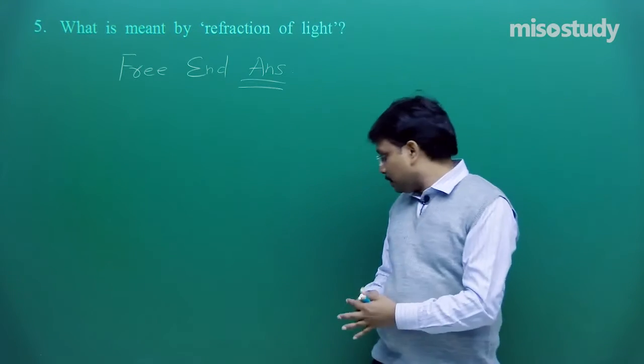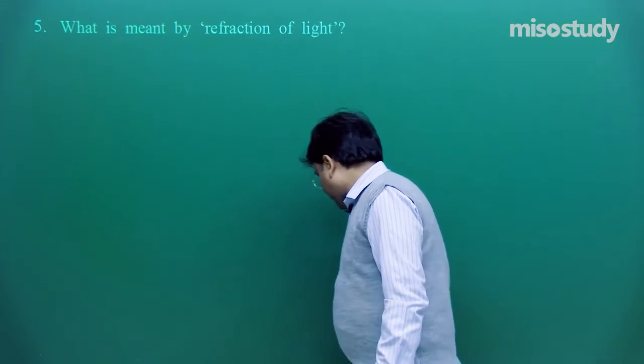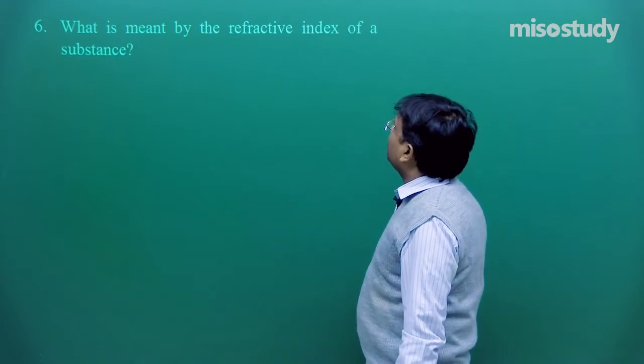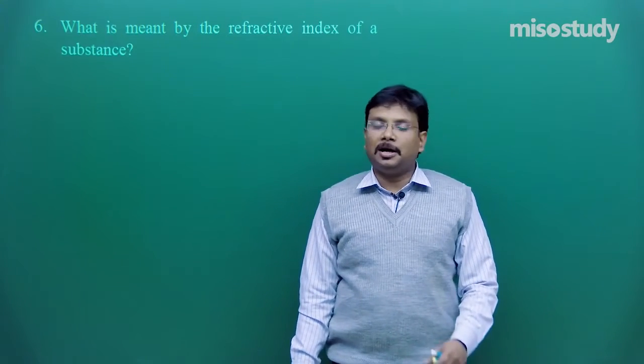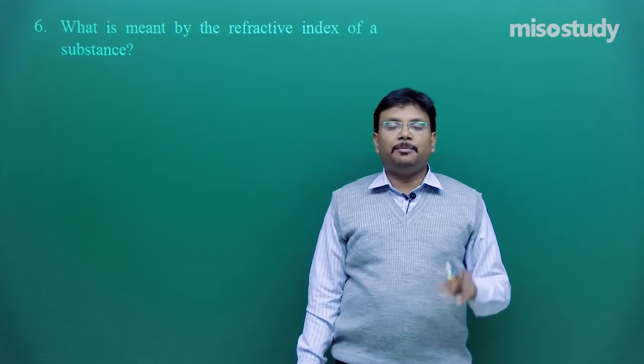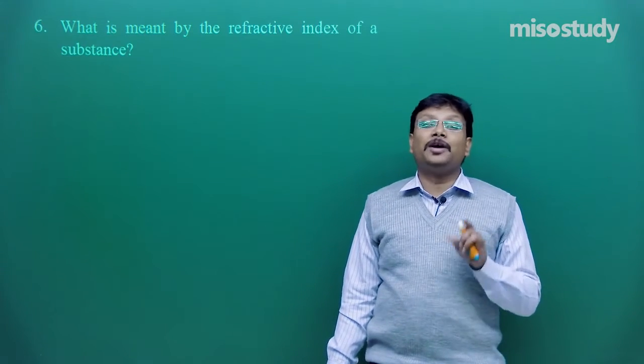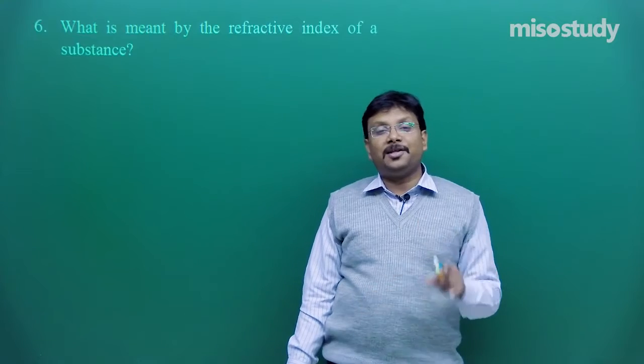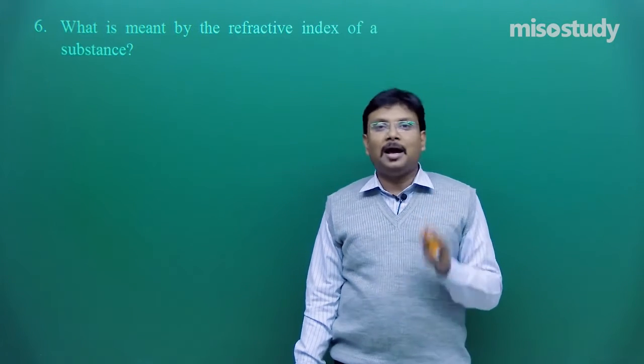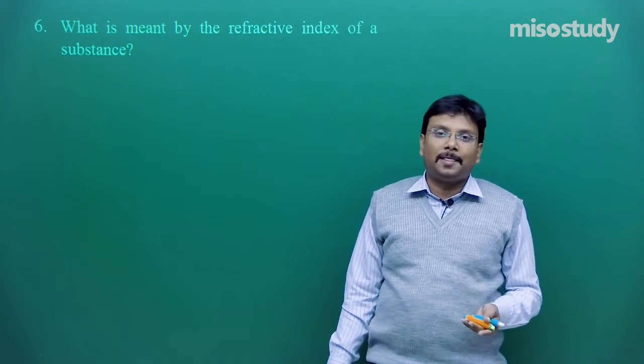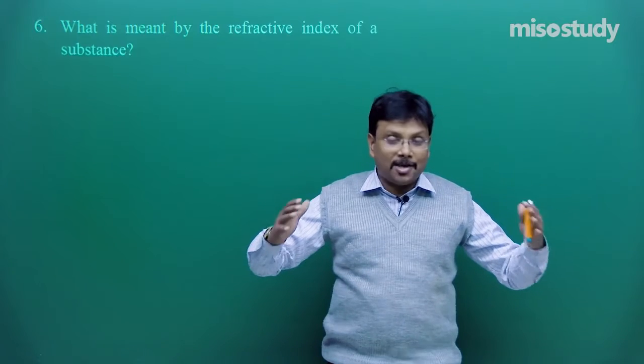What is meant by the refractive index of a substance? Refractive index of a substance is nothing but the ratio of velocity of light in vacuum divided by the speed of light in any medium. So mu or n is the symbol for refractive index. It has no unit, because it is the ratio of two velocity C by V, where C is speed of light in free space. It has value 3 into 10 to the power 8 meter per second, maximum possible value of any particles speed. And here light particles are known as photons or quanta. So this way you can write down the answer. These are free-hand answers. As such there is no hard fast rule, you have to apply your thinking.